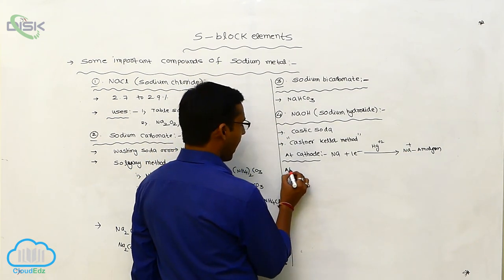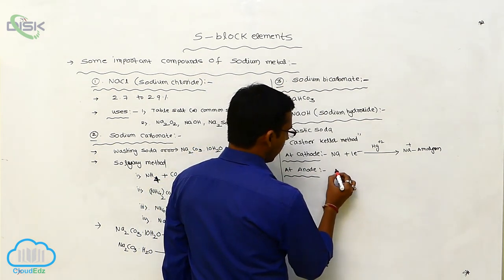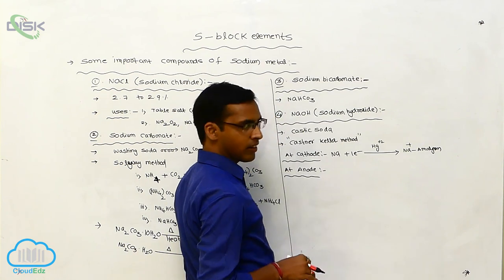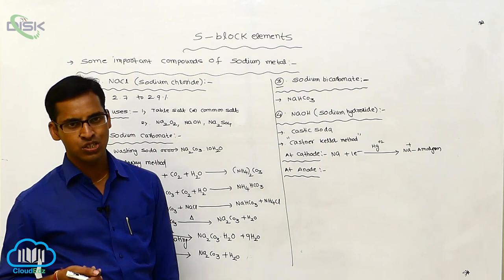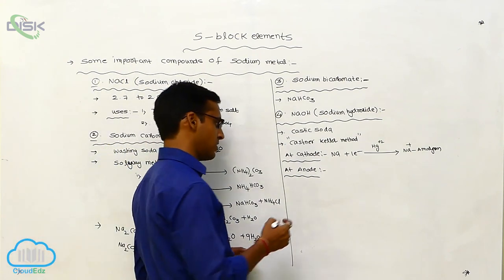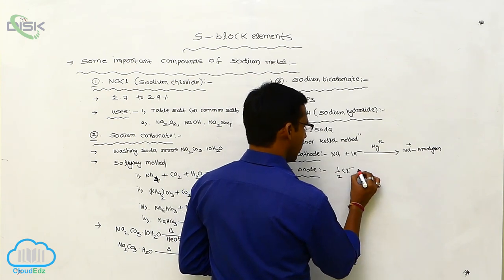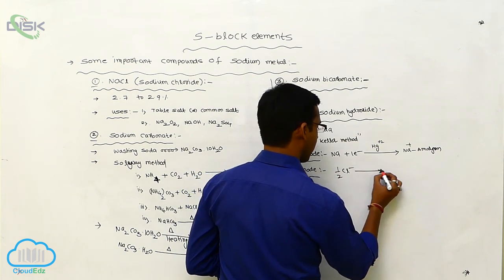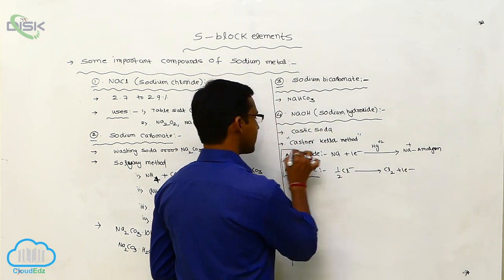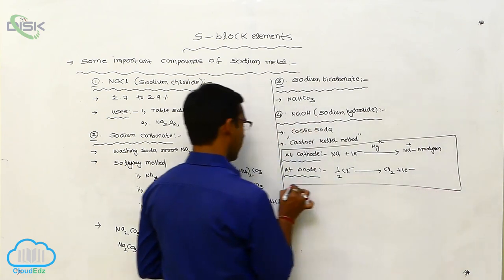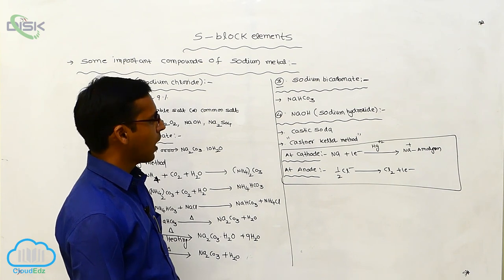At the anode, oxidation occurs — meaning loss of electrons. Cl⁻ loses one electron and is converted to Cl₂ gas, releasing one electron. These are the reactions that take place at the anode and cathode in the Castner-Kellner process.